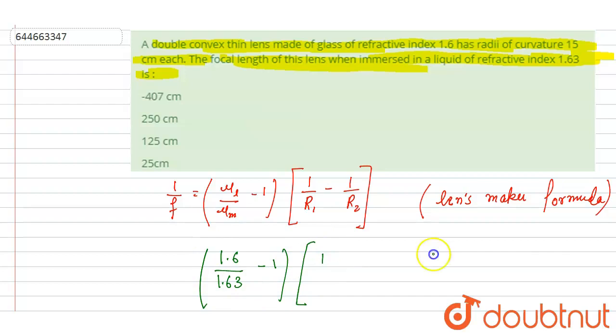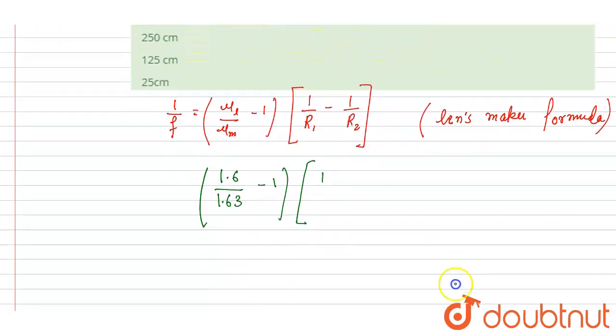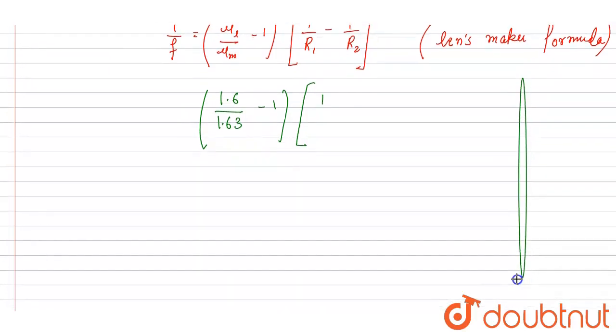R1 is, if you see, this is an equi-convex lens. If I make an equi-convex lens like this, you can see the first surface is having positive radius of curvature, so I will write...